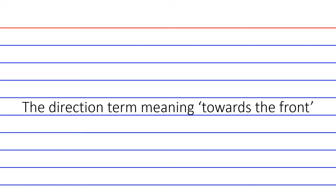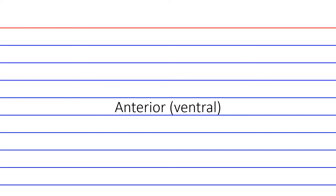This directional term means towards the front. The answer is anterior, and anterior just means before or in front of. Ventral means towards the belly. So in the case of a bipedal organism, anterior and ventral are interchangeable with one another, since the belly is anterior.